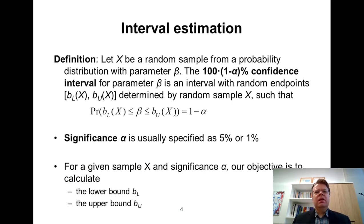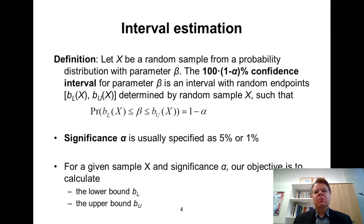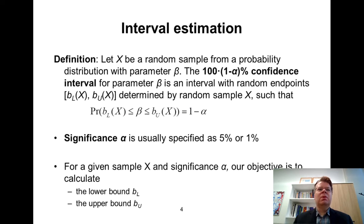You have likely encountered the definition of the confidence interval before, perhaps in secondary school or introductory statistics courses. Let me remind you, phrased in terms of the parameter beta — which could be one of the slope coefficients or the intercept of the regression model. Two important concepts in the confidence interval are the confidence level and the significance level.